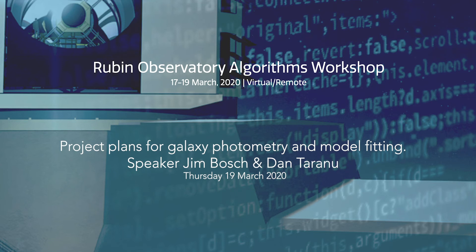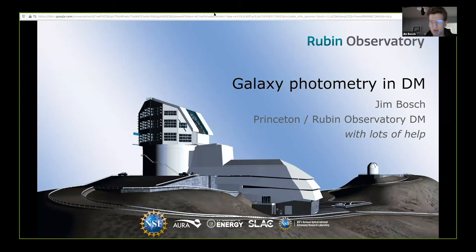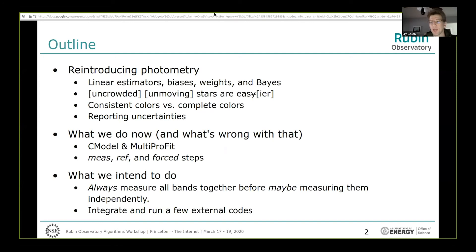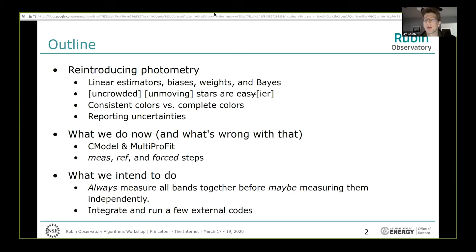I'll start off this discussion of galaxy photometry and DM. The first part of my talk will have a lot in common with Conrad's. I'm going to start by reintroducing photometry and how we think about it — connecting the way we measure galaxies to the way we measure stars, since stars are an easier problem. I'll cover what we do right now, what's wrong with that qualitatively, and then finish with what we intend to do and preview possible fixes.